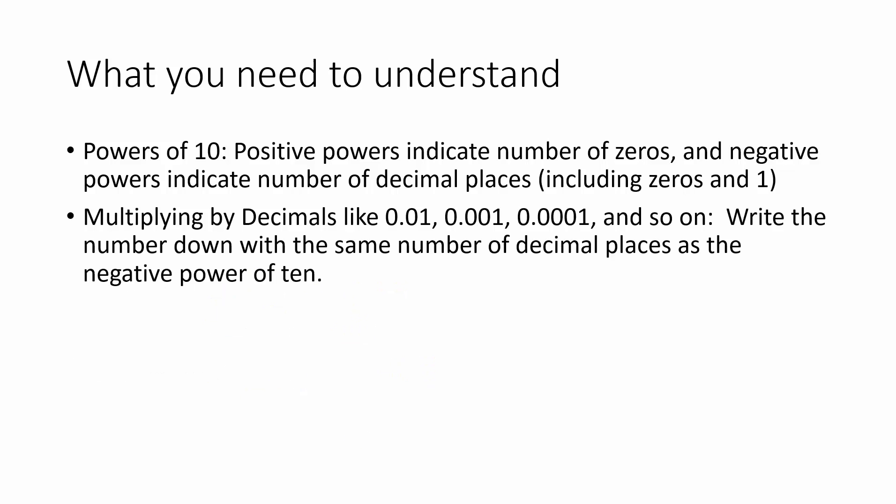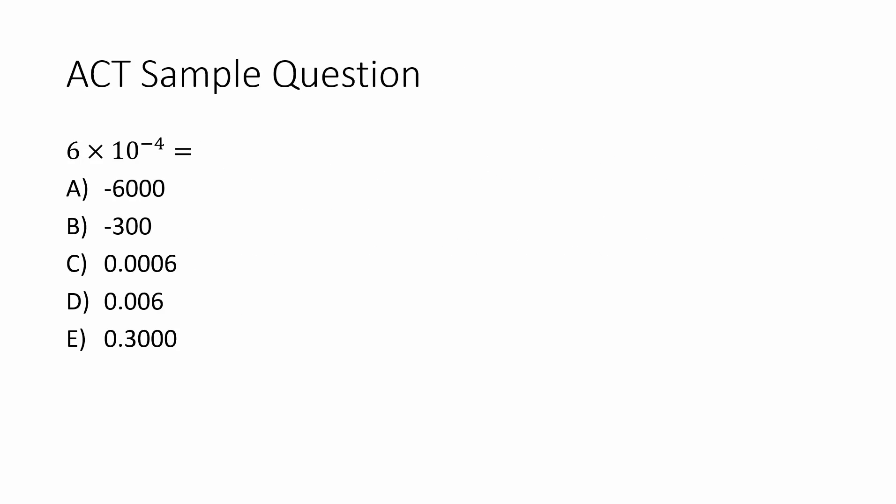So what we need to understand about multiplying decimals like this is to write the number down with the same number of decimal places as the negative power of 10, represented by 0.01, 0.001, and so on.